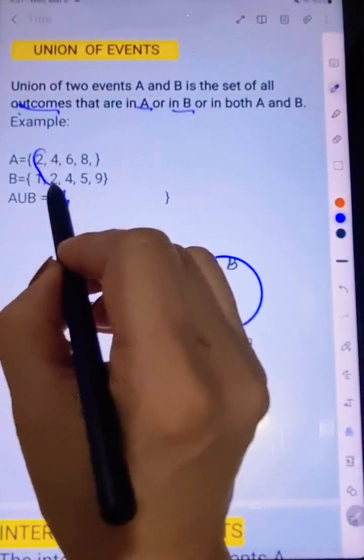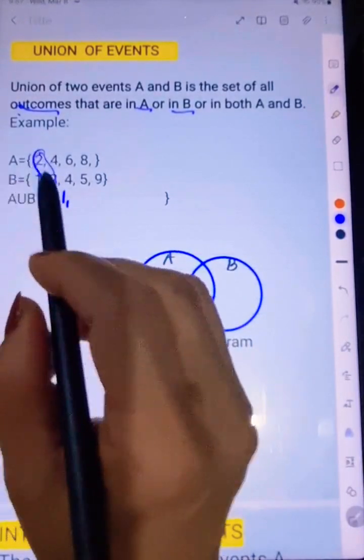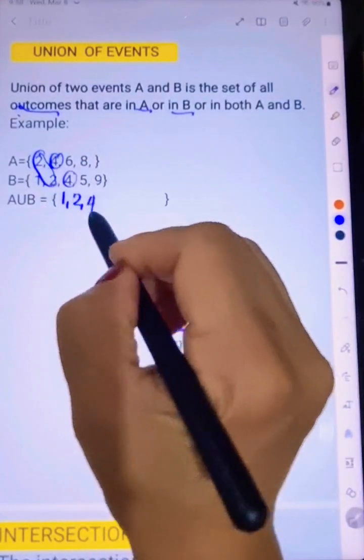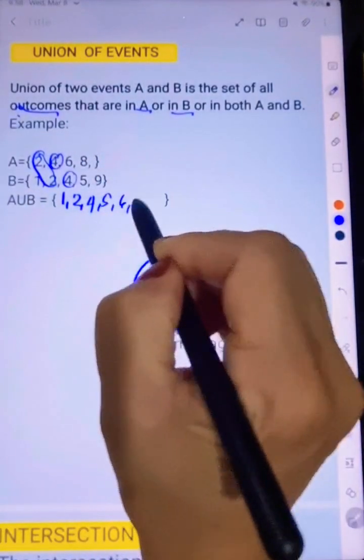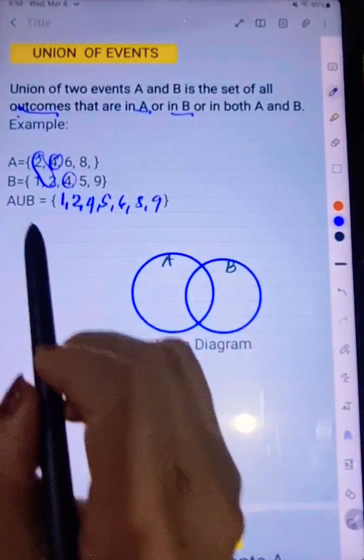And then you notice that 2 can be found in both sets here, A and B, so you can list it once. Then same with 4 here, so 4, then 5, 6, 8, and 9. So that is A union B.